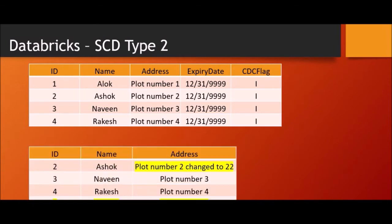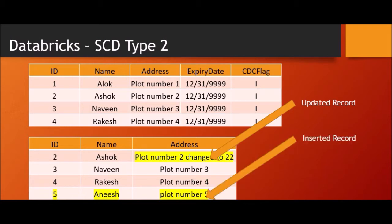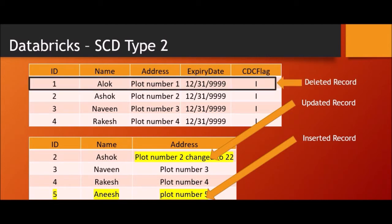This is the current snapshot of data. Tomorrow you may get a new set of data from your source. The bottom table here is the new data from source. Now if you notice, there is one record which is updated — ID 2 — where the address has changed. One new record has been added, which is going to be a new insert. You'll also notice the second table does not have ID equals 1, so that is actually a deleted record.